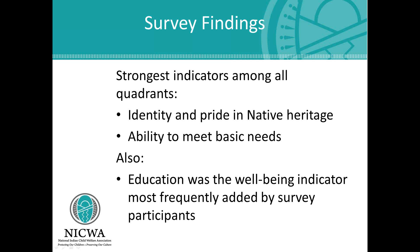Education was the indicator most frequently added by our survey participants as missing. What was interesting was that it was defined very broadly — not only representing an important opportunity for youth in professional development, but also framed in terms of understanding the impact of historical trauma on Native communities and having a sense of social justice and understanding about the history of American government policy toward Native communities. I thought that was really illuminating.